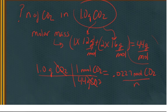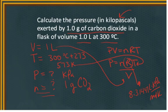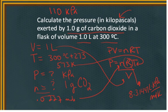That's how much moles of carbon dioxide I have in this particular flask. So N is 0.0227 moles. So, I can plug that in for the N. Now, I have everything, and I can calculate the pressure. The pressure in kilopascals exerted by one gram of carbon dioxide is going to be equal to, when you plug it all in, 110 kilopascals.